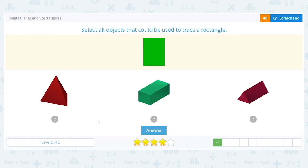I hope you said the rectangular prism, the green solid figure, because you can see the rectangle right on it. And same for the triangular prism, because that has a rectangle right on it.